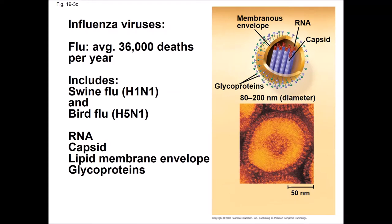Influenza has a more complex viral structure. Influenza is the flu virus — it causes between 12,000 and 79,000 deaths per year in the US, so please get a flu shot so you don't transmit the flu to someone with a weak immune system. Some influenza strains include swine flu and bird flu. Influenza is an RNA virus with a capsid as well as a lipid membrane envelope surrounding the capsid. The lipid membrane includes glycoproteins. The RNA in influenza is also complex — it is made up of eight tiny chromosomes, each surrounded by its own tiny capsid. The entire genome only codes for 11 proteins.